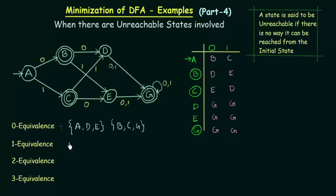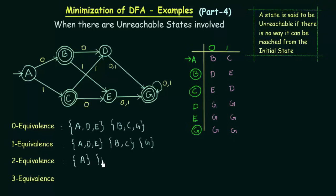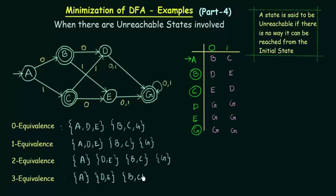I am not going to solve the one equivalence step by step because I have already explained it in the previous lecture. If you solve it, you will find that in one equivalence, states A, D, and E are one-equivalent to each other; states B and C are one-equivalent to each other; and G is not one-equivalent to any of the states. For two equivalence, state A is not two-equivalent to any state; states D and E are two-equivalent to each other; states B and C are two-equivalent to each other; and G is by itself. For three equivalence, the same result holds: A is alone, D and E are three-equivalent, B and C are three-equivalent, and G is by itself.